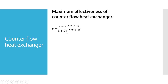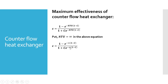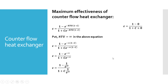The term e raised to minus NTU(1 minus C) has to be minimum, so we substitute NTU equal to infinity in the above equation. In the numerator it is 1 minus e raised to minus infinity, and in the denominator also NTU is infinity, giving 1 minus e raised to minus infinity, divided by C times e raised to minus infinity times (1 minus C). Since e raised to minus infinity equals 1 upon e raised to infinity, which is 0, the effectiveness becomes 1 upon 1, that is 1.